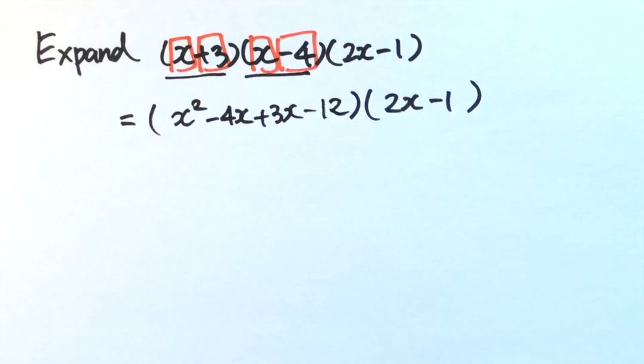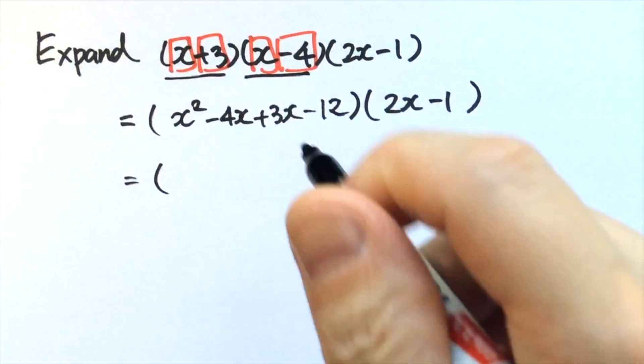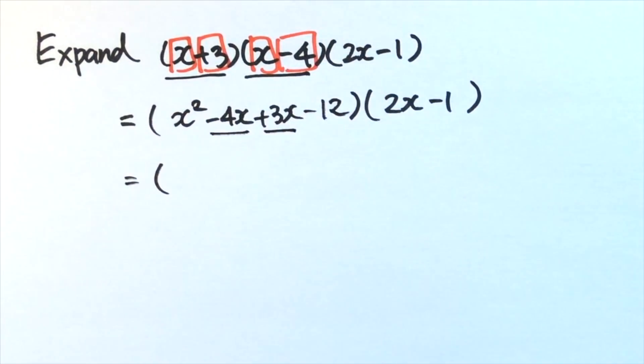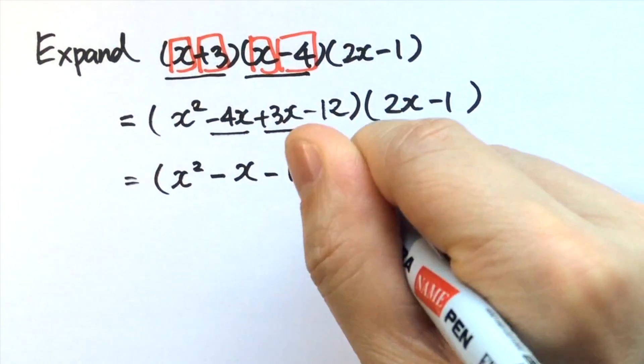Now we have four terms in the first bracket, and we have two like terms: negative 4x plus 3x. We can further simplify this.